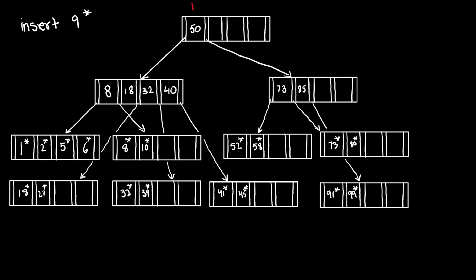Let's insert 9 into this tree. First, we look at the root. It only contains 50. 9 is less than 50, so we traverse down the pointer that is before 50. 9 is greater than 8 and less than 18, so we take that pointer down.